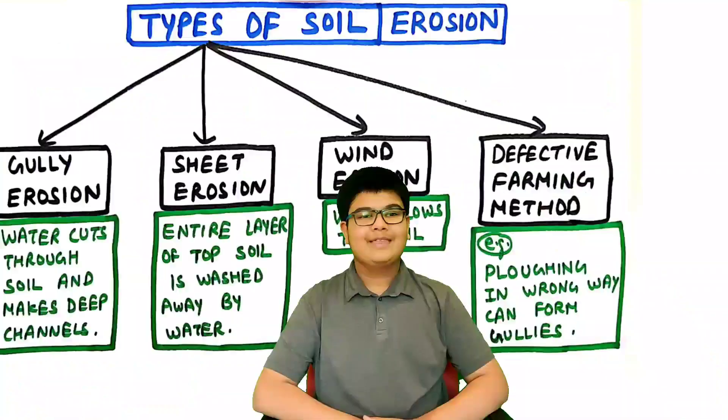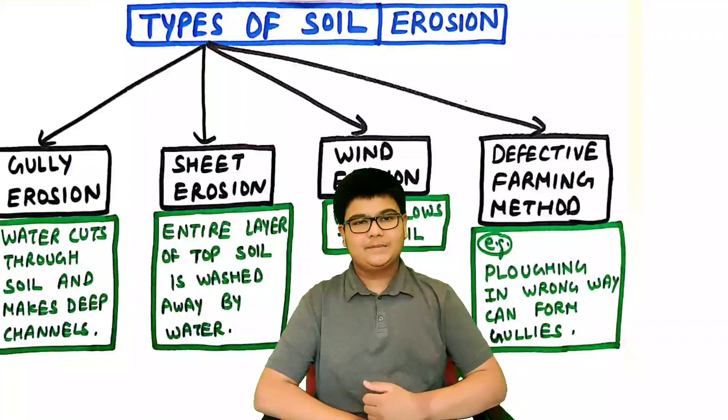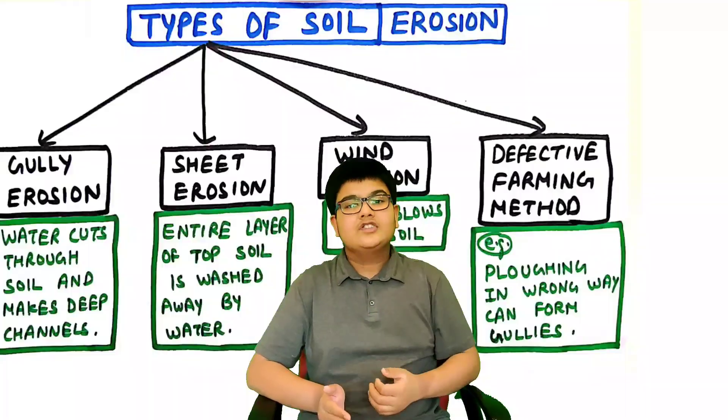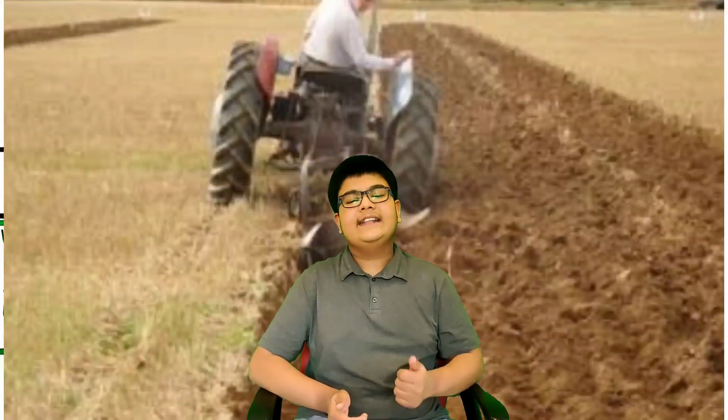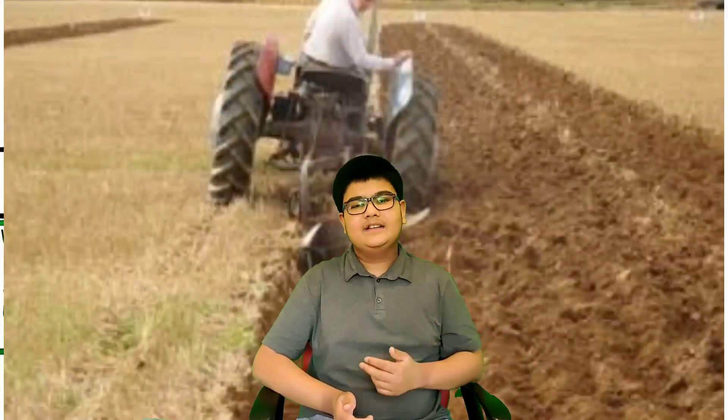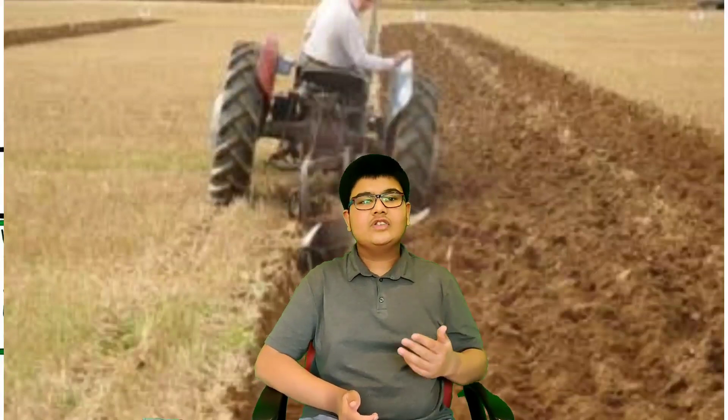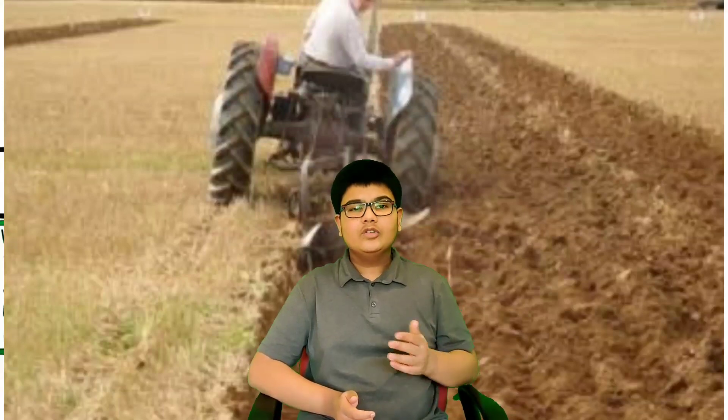There are four types of soil erosion. First, gully erosion, where water cuts through the soil making very deep channels known as gullies. Second, sheet erosion, where an entire layer of topsoil is washed away by water. You can refer to pictures to see the difference between gully and sheet erosion. Third, wind erosion, where wind blows away the top layer of soil, usually in desert areas. Fourth, defective farming methods such as plowing in the wrong way can also lead to formation of gullies and soil erosion.